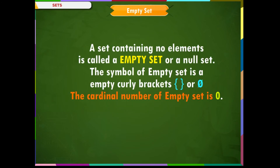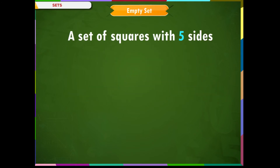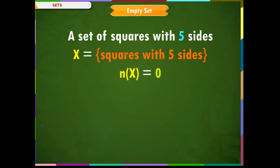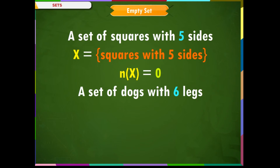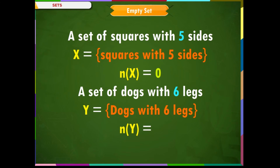Empty set. A set containing no elements is called an empty set or a null set. The symbol of an empty set is empty curly brackets or the symbol shown on the screen. The cardinal number of an empty set is 0. Some examples: a set of squares with 5 sides — let us name the set X. X = {squares with 5 sides}, n(X) = 0. A set of dogs with 6 legs — let us name the set Y. Y = {dogs with 6 legs}, n(Y) = 0.